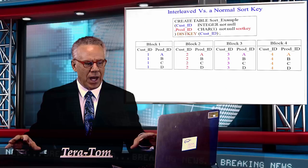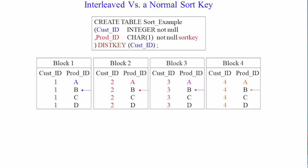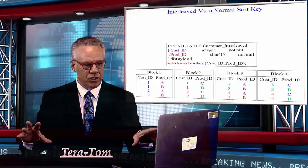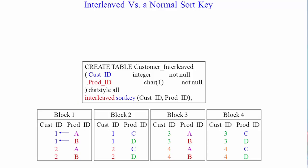In the bottom, they've got four blocks, but it's interleaved. So, there's some cust IDs, ones and twos in block one, and A, B, A, B. And in block two, cust ID ones and twos with CD, CD, and so on.